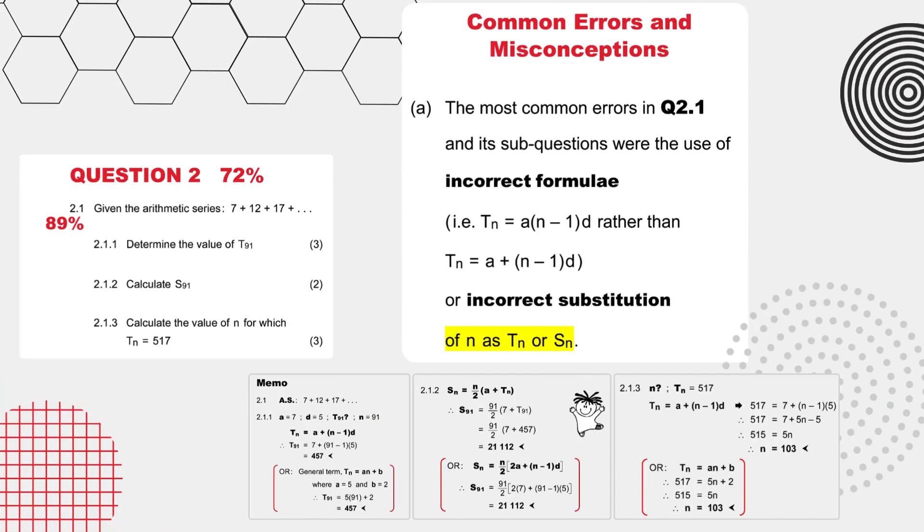Let's have a look now at the common errors and misconceptions laid out by the diagnostic report. The most common errors in question 2.1 and its sub-questions were the use of incorrect formulae, like for TN, or incorrect substitution of n as TN or SN.